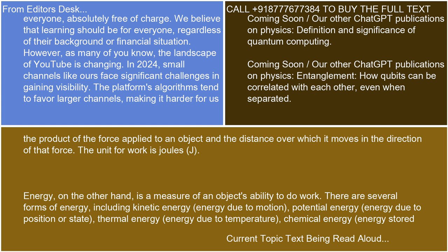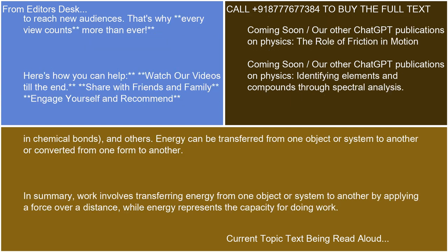Energy, on the other hand, is a measure of an object's ability to do work. There are several forms of energy, including kinetic energy — energy due to motion — potential energy — energy due to position or state — thermal energy — energy due to temperature — chemical energy — energy stored in chemical bonds — and others. Energy can be transferred from one object or system to another, or converted from one form to another.